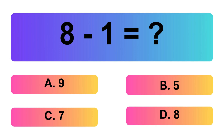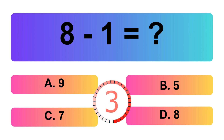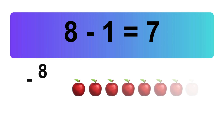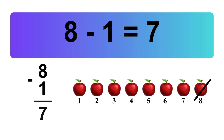8 minus 1 is equal what? Let's count it: 1, 2, 3, 4, 5, 6, 7. So, the answer is 8 minus 1 is 7.